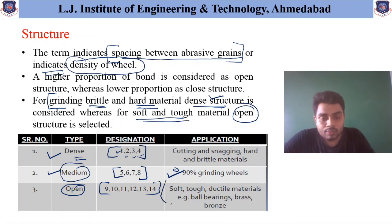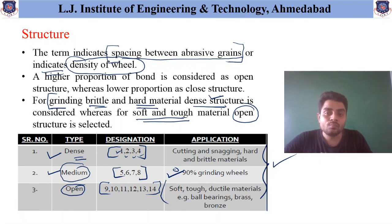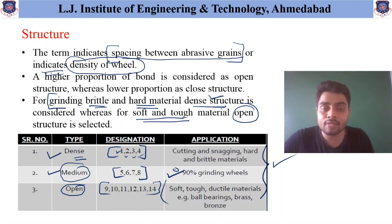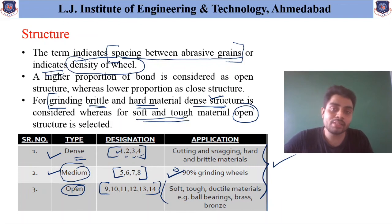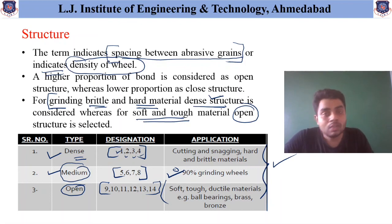These are the different applications of grinding wheel based on the structure. By combining all different parameters, one can decide which type of grinding wheel is required for machining — whether cast iron, stainless steel, bronze, or steel material. Based on requirement, one can choose different types of structure, grain, abrasive material, or size of grit particles.